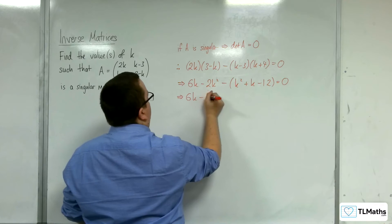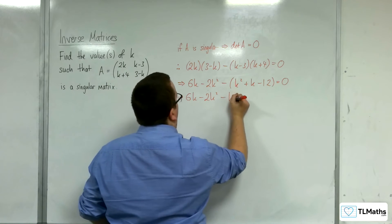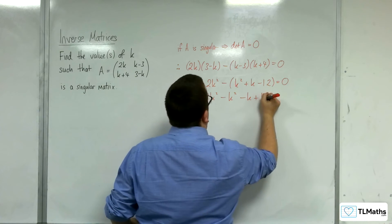Multiply that out: 6k take away 2k squared, take k squared, take k plus 12 is 0.